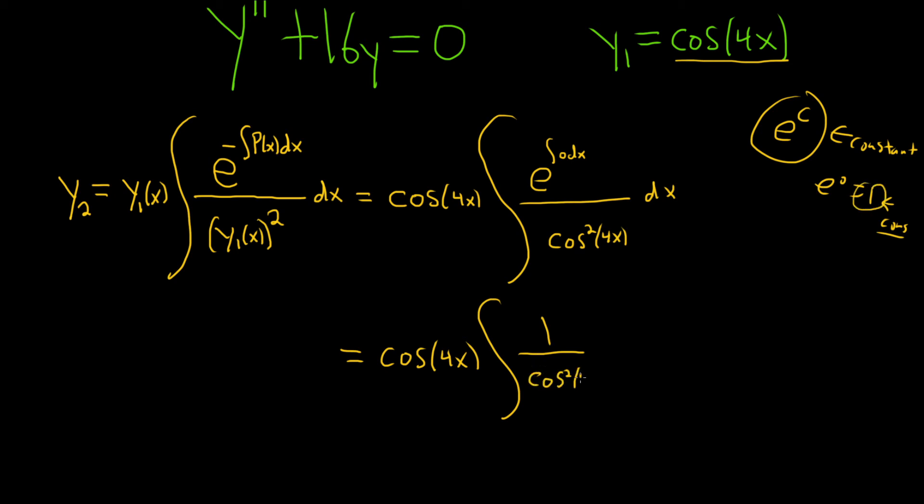Again, we ignore constants always, so really, if you wanted to put it there, you could. But again, if you let c be equal to 0, you get a better constant. So cosine squared of 4x dx.